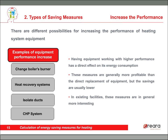We can also install a CHP system, which we'll go deeper into in the following slides. Having equipment working with higher performance has a direct effect on energy consumption. These measures are generally more profitable because they are less expensive, but the savings are usually lower. These measures are really interesting in places where the equipment is quite new and you can't spend a lot of money on new equipment.